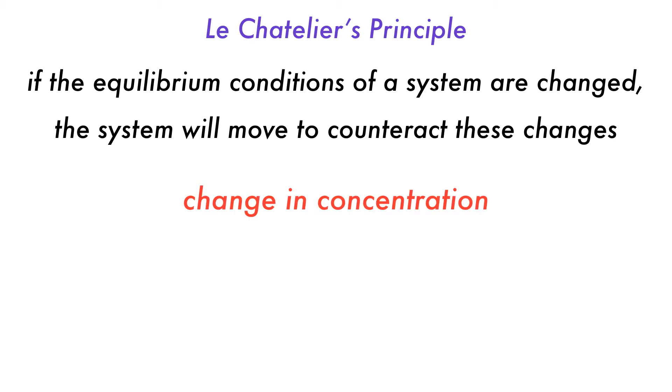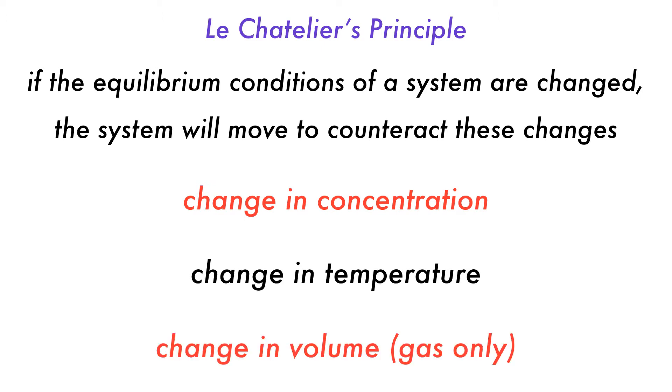There are three main ways to disturb an equilibrium: a change in concentration of one of the reactants or products, such as by addition of a reactant to a closed system; a change in temperature, such as cooling a reaction in an ice bath; or a change in volume for a gaseous system, which is also a change in pressure.